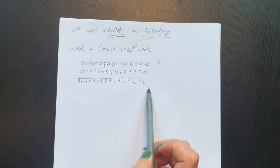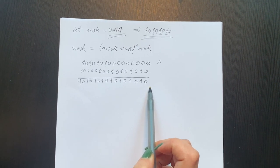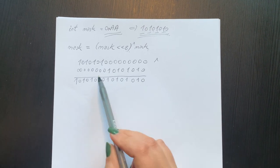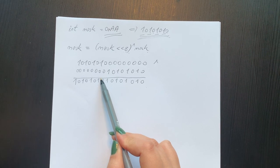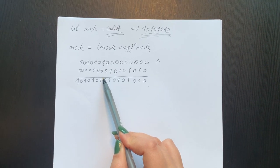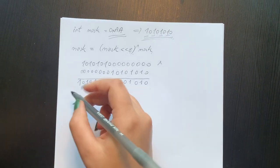But since, as we said, we have in an integer 32 bits, we need to further extend this mask with another 16 bits. And we do that by a left shift of 16 bits, which is then further OR'd with the mask. And it goes like this.